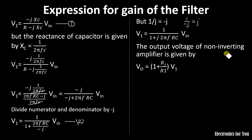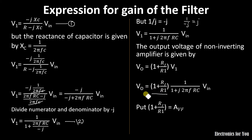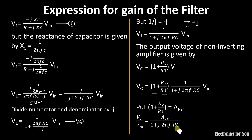The output voltage for a non-inverting amplifier is VO = (1 + RF/R1) × V1. Substituting the value of V1, we get the output voltage expression. Letting (1 + RF/R1) = AVF, the passband gain, and rearranging, we get: VO/Vin = AVF / (1 + j·2πFRC).